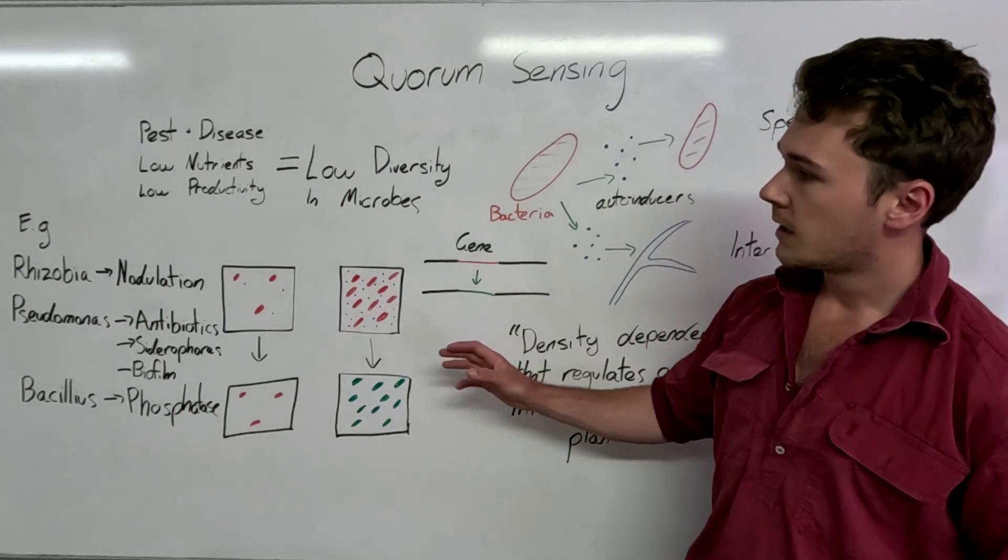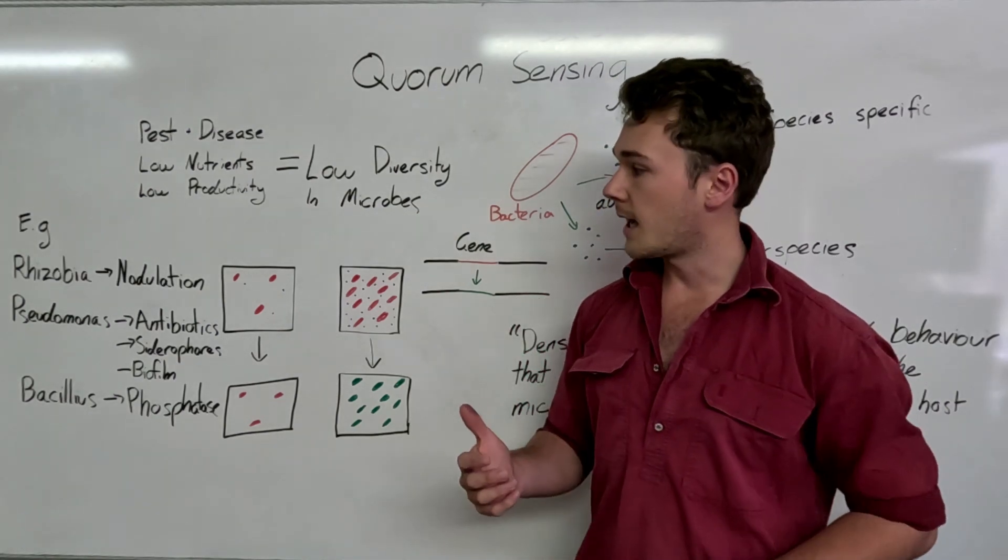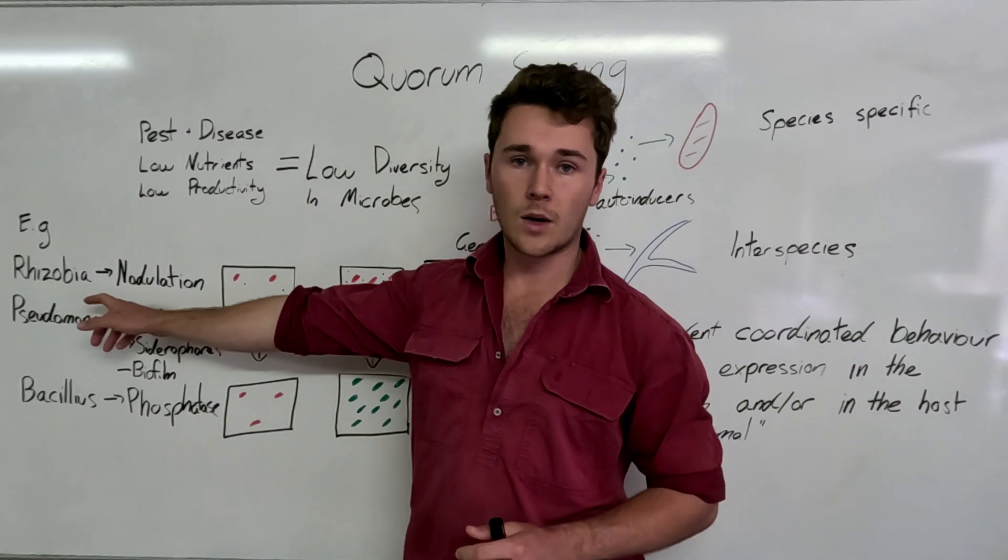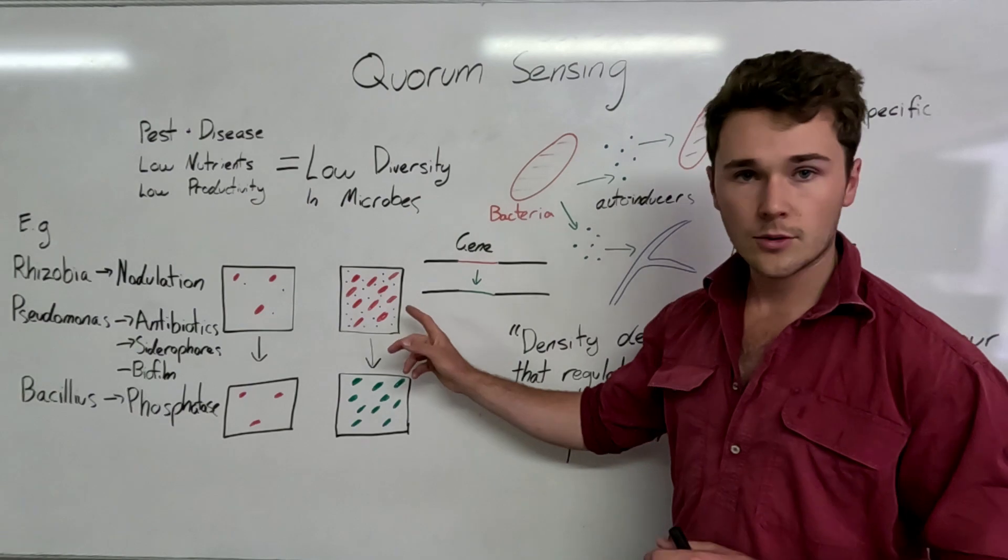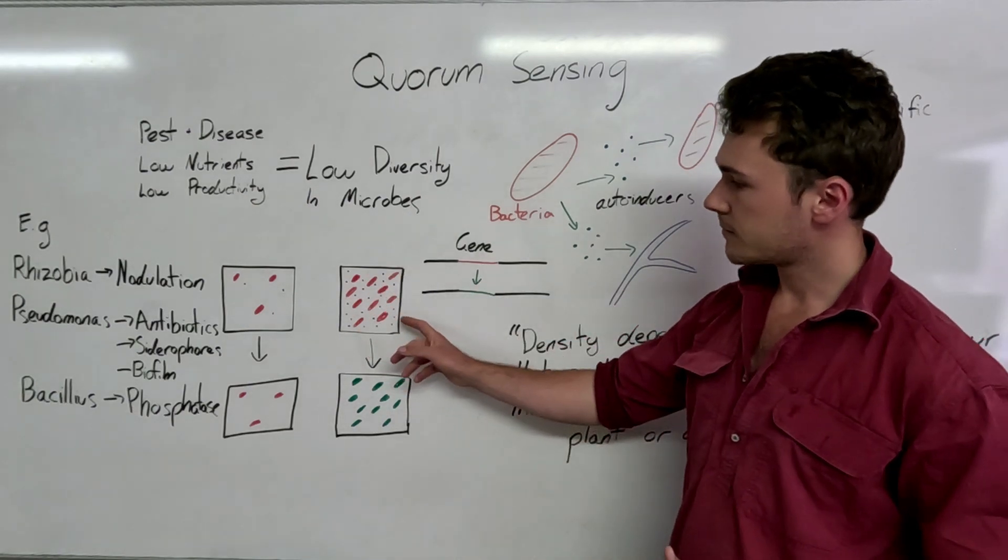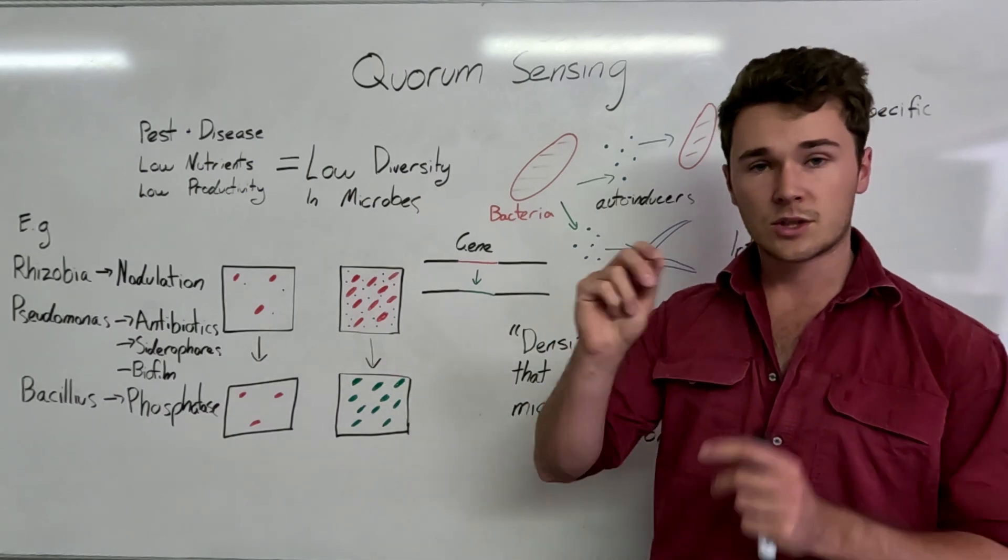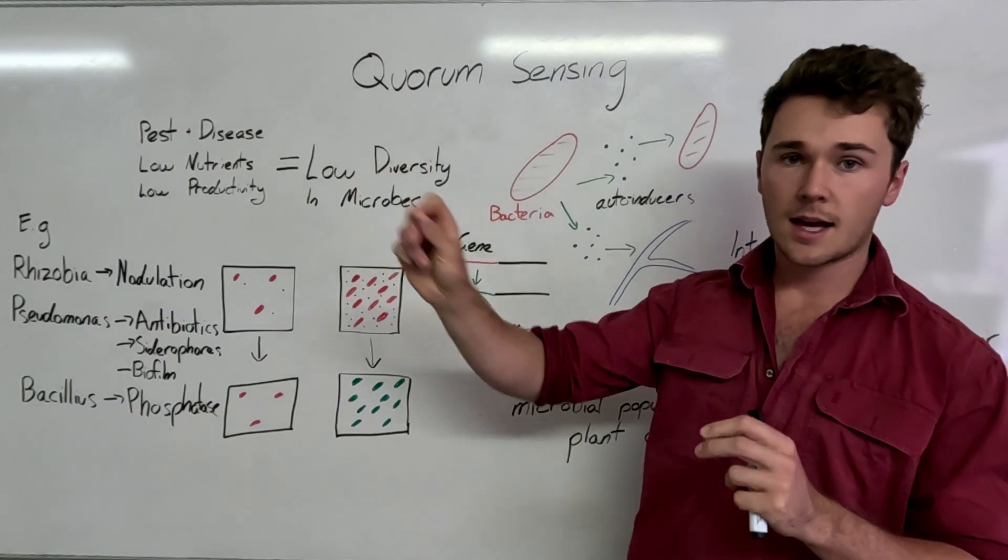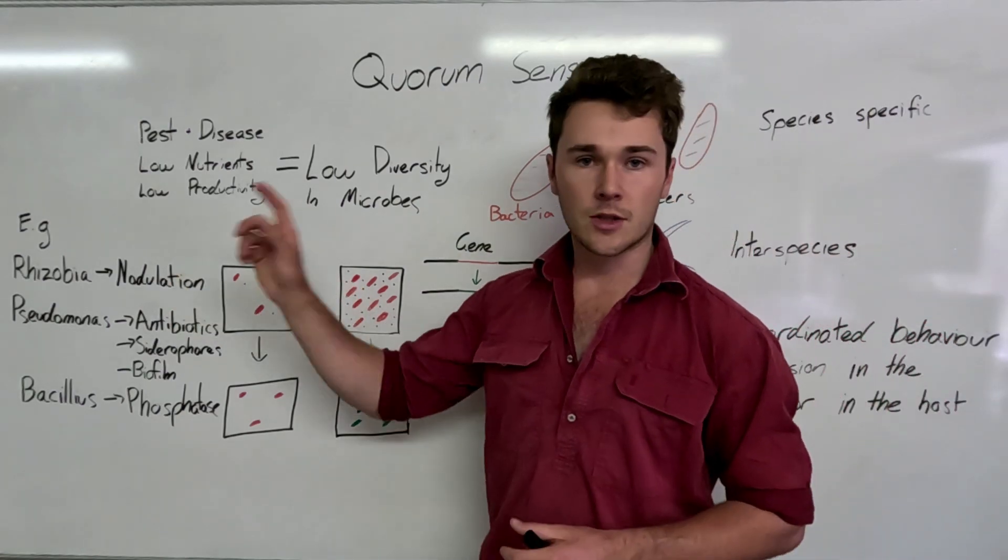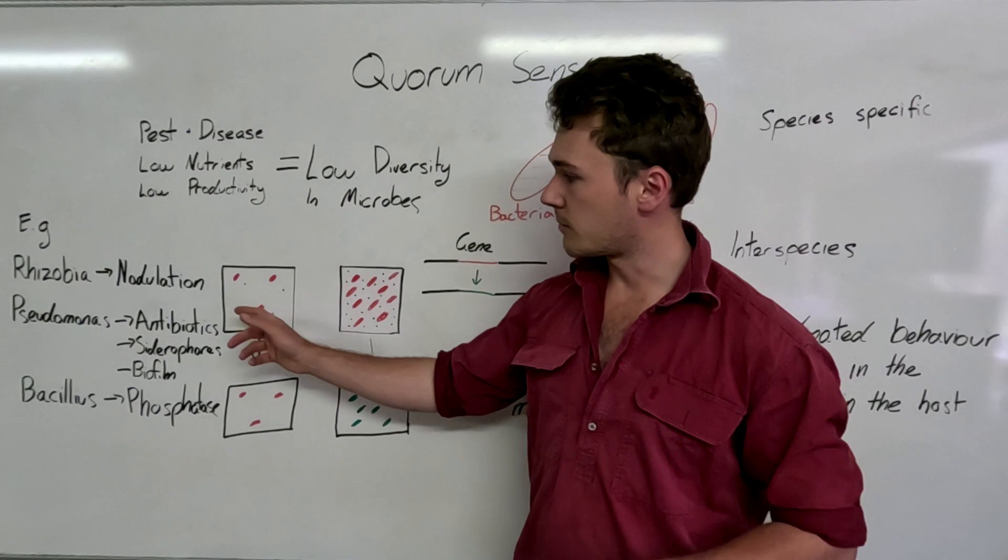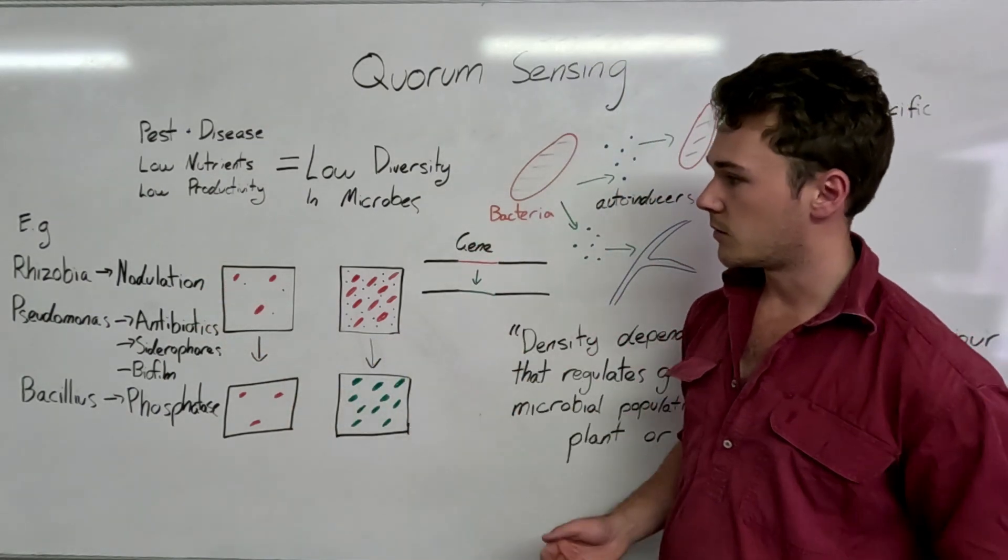So some examples of this is rhizobium bacteria. They're the ones that live in the nodules of legumes. Now, quorum sensing is required for these guys in terms of nodulation. So they have to reach a certain threshold. They're releasing all these auto-inducers all the time. They reach a threshold to then release what's called a nod factor, which then indicates to the plant, hey, we're ready for nodulation, there's enough of us for you to then nodulate. This is important so no one wastes time and effort in the nodulation process if there wasn't enough rhizobium bacteria.